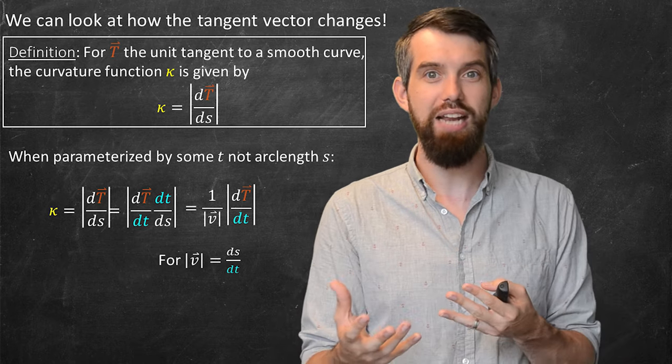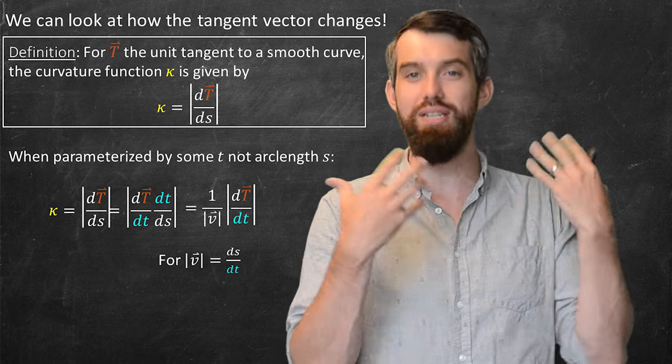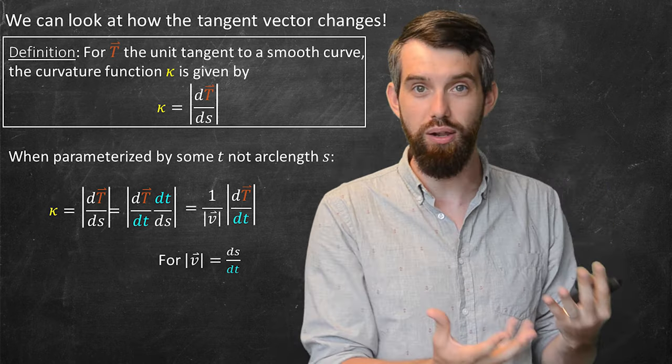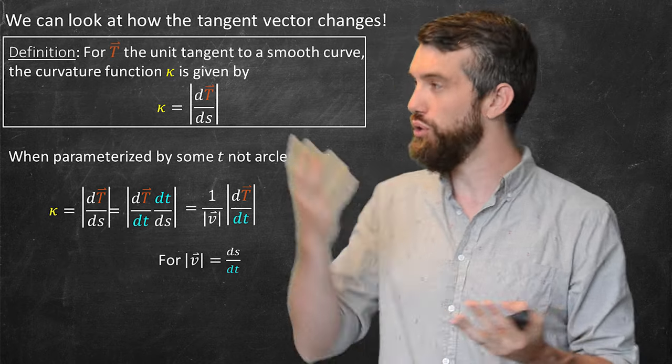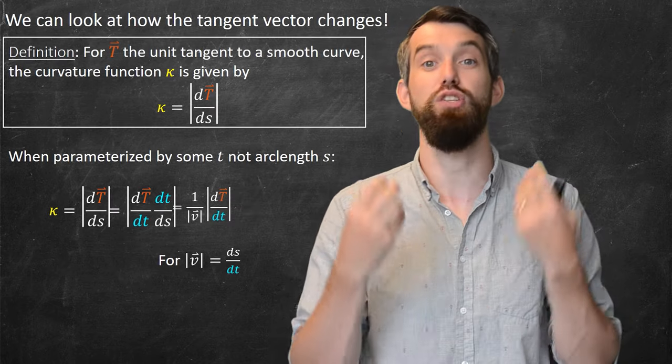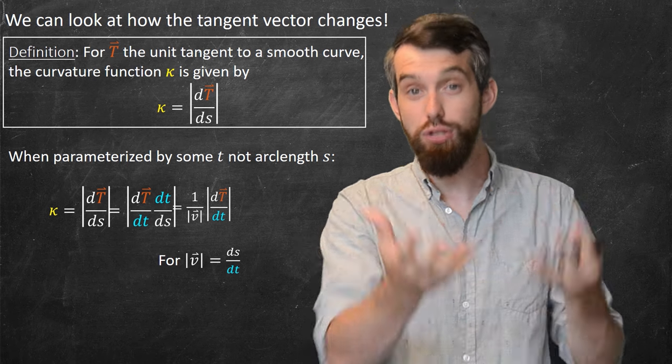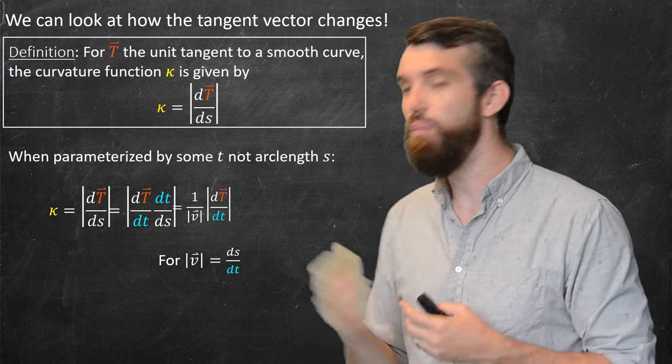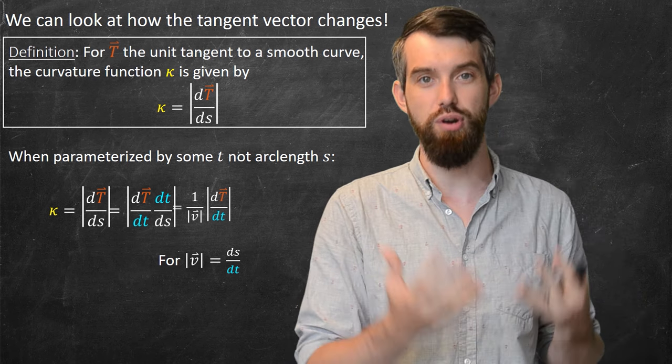The whole point of this technical aside is to say that if you have your unit tangent vector expressed in terms of arc length, great, you get the simpler top formula. But if your curve is given in terms of some other parameterization, some other parameter t, that's also totally fine, it's just you have to divide out by the velocity when you go and compute your curvature.